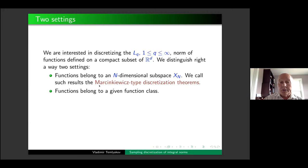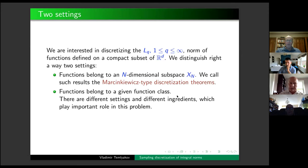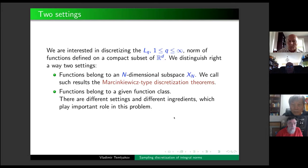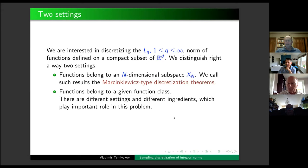These two names are now popular: sampling discretization, which is in the title, and Marcinkiewicz-type discretization theory — named because the first result of this type was proved by Marcinkiewicz. That was a result about discretization of univariate trigonometric polynomials. There are different settings and ingredients, but we concentrate on that direction since discretization could be understood in a very wide way.